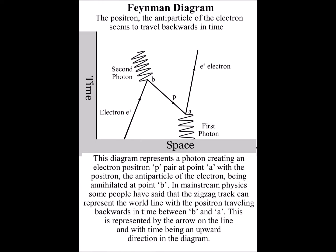This diagram represents a photon creating an electron-positron pair at point A, with the positron, the antiparticle of the electron, being annihilated at point B. In mainstream physics,